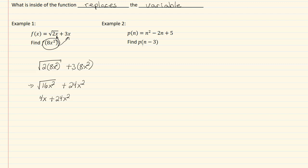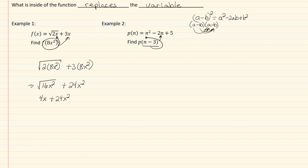Going to example two — here we have a binomial that we're going to replace into our function. So you want to keep in mind that because we have a square, you would probably want to know this formula: (a − b)² equals a² minus 2ab plus b². Or if you prefer, you could do FOILing, distributing through n minus three squared minus two times n minus three plus five.